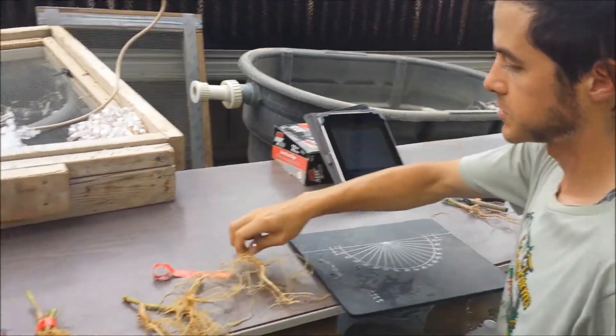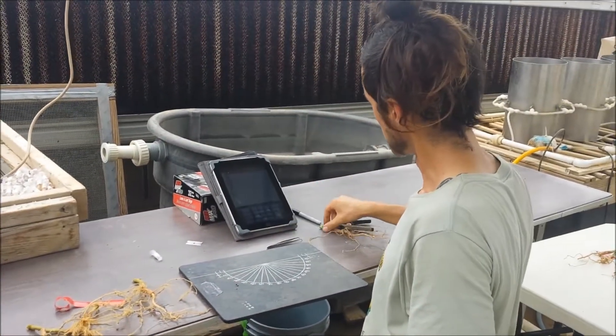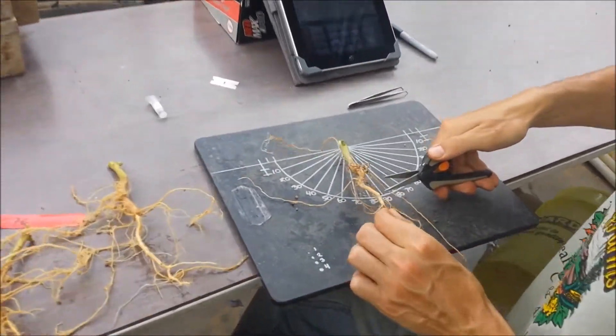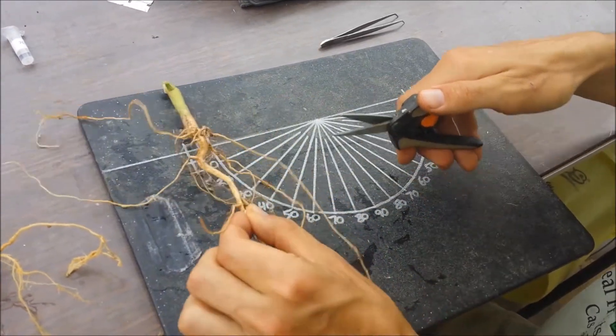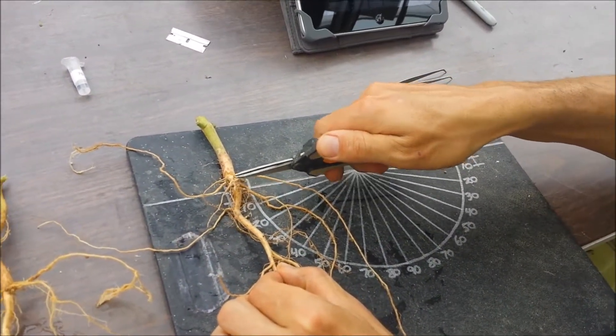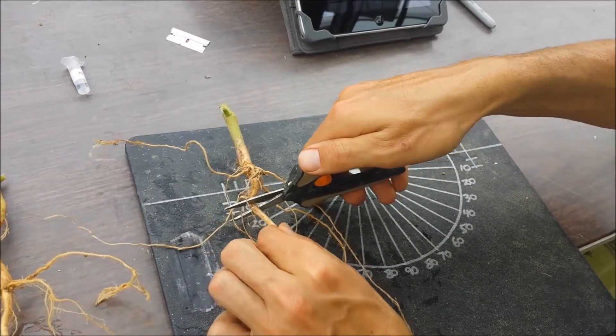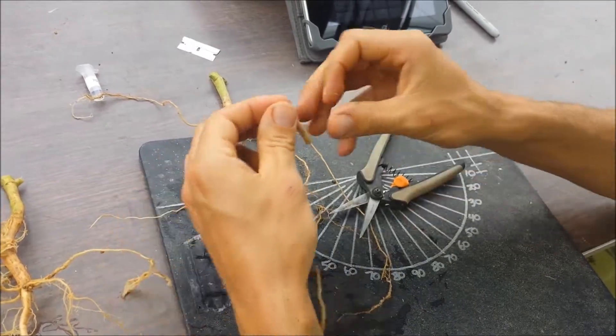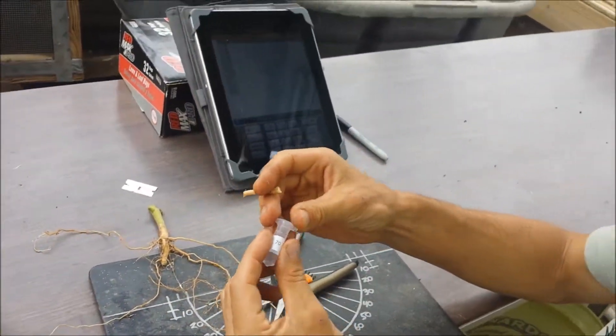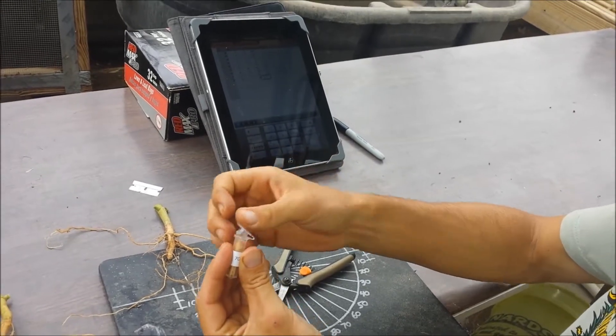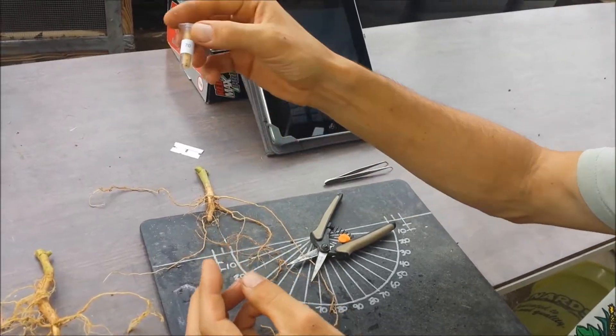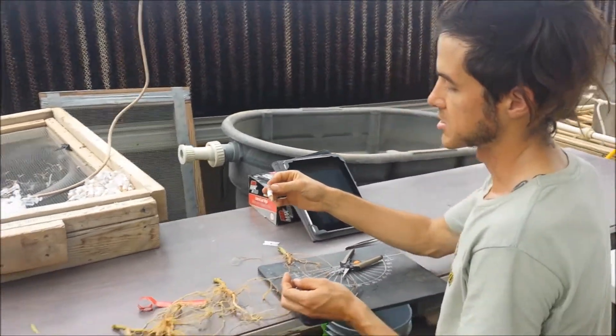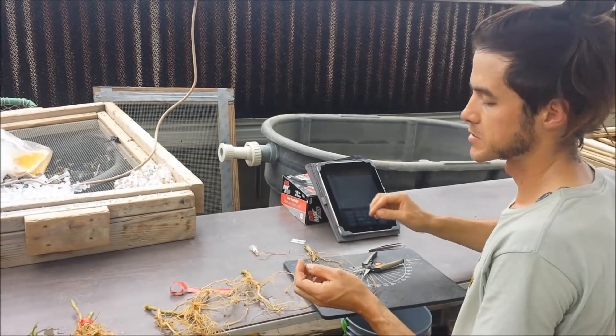Once we have taken those measurements, we can collect an anatomical sample. I usually try to get a sample about two centimeters below the point where the basals emerge and simply cut. Usually a two centimeter segment, because that's the size of our tubes. Throw that in there, and then we can use that later on for analysis, either with the laser or with hand sectioning and camera mounted in a microscope.